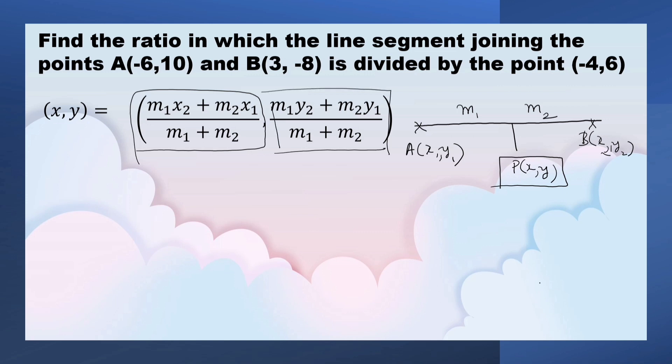Now, let us solve only for X coordinate. Here, X is equal to minus 4. Now, let us substitute. We have to find the ratio. So, X2 is 3, M1 into 3 plus M2, X1 is minus 6 upon M1 plus M2. Because we have to find the ratio, we don't know it.